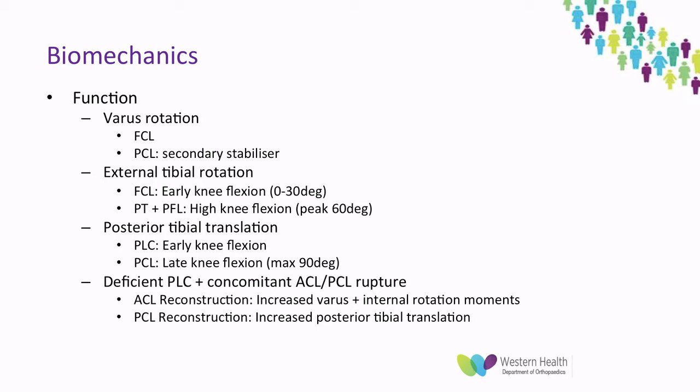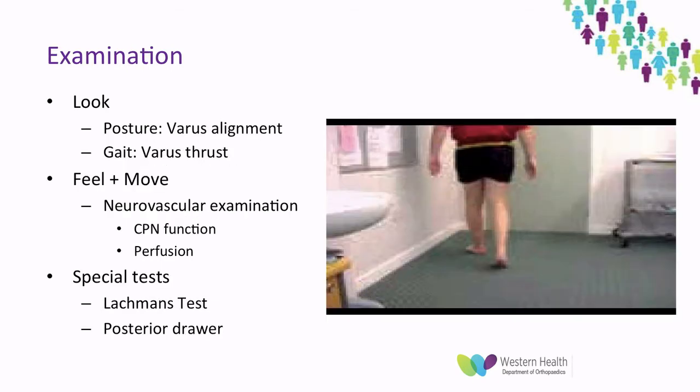To remember: a deficient posterolateral corner with ACL or PCL rupture means that when we reconstruct these ligaments, it's important to recognise these injuries because the increased stress through the graft will inevitably lead to graft failure. These injuries are often high-energy injuries and the mechanism is either a direct blow to the anteromedial tibia, a hyperextension injury, or a varus stress.